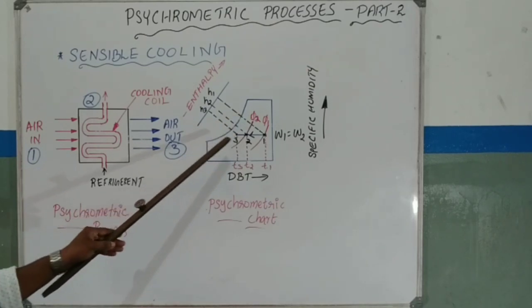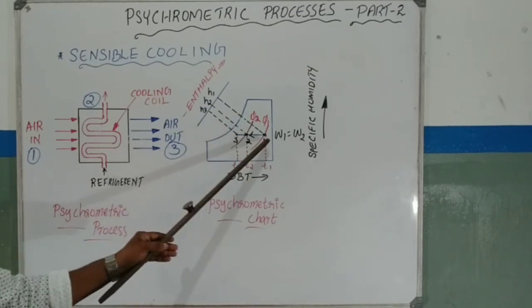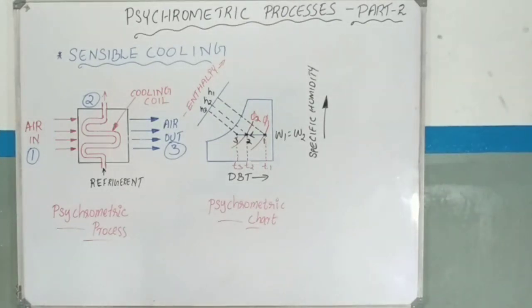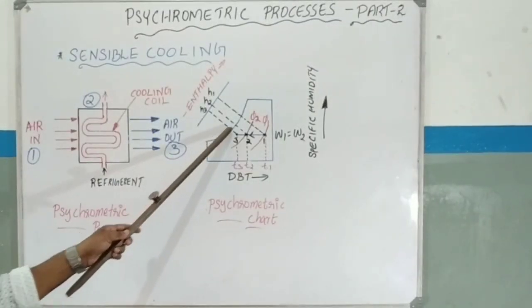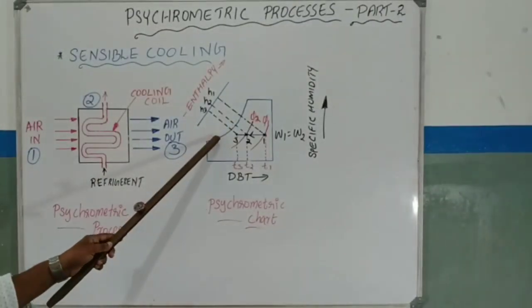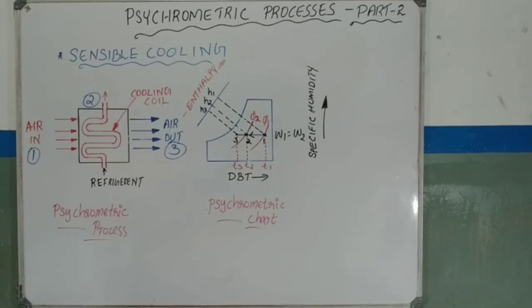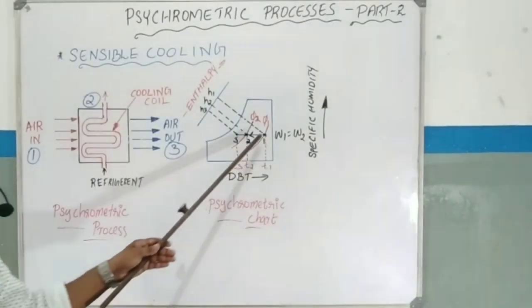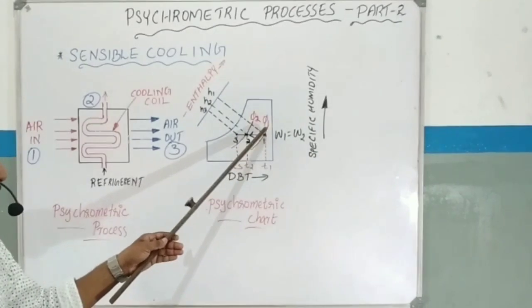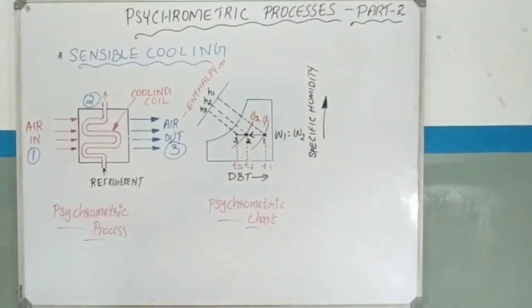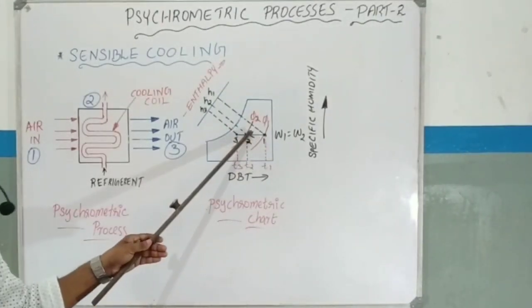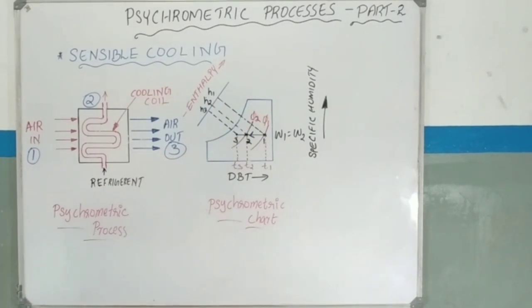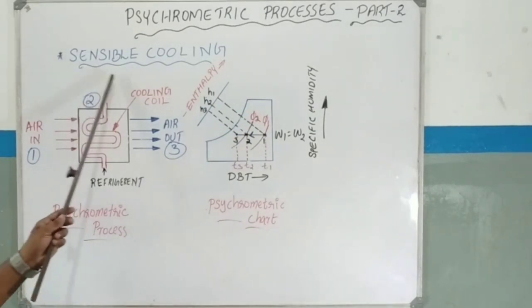You can see the saturation curve at the 100% relative humidity level. This is the saturation curve, and it represents 100% relative humidity. The sensible cooling process occurs along a line below the saturation curve.